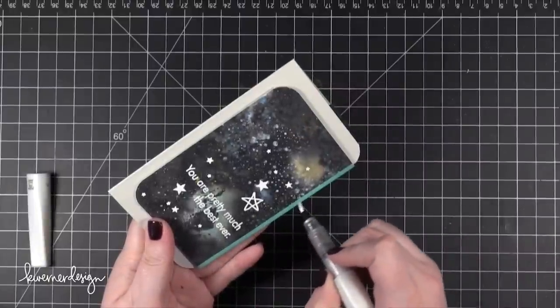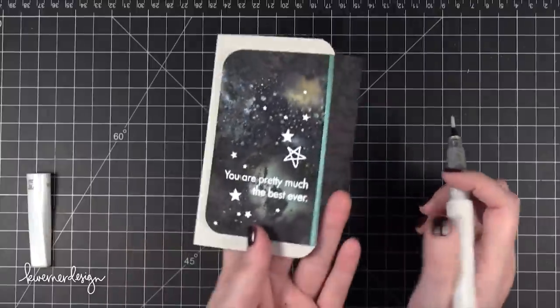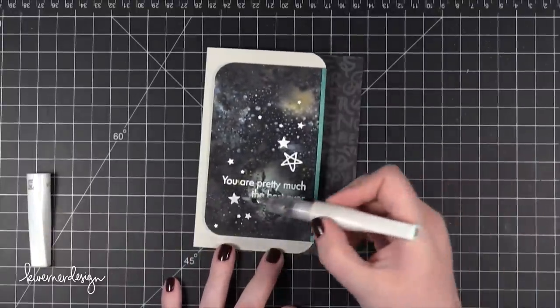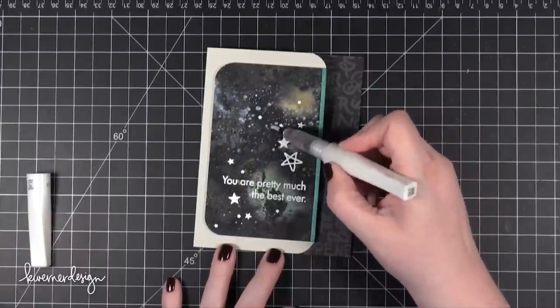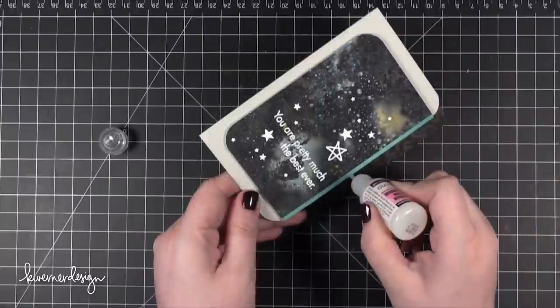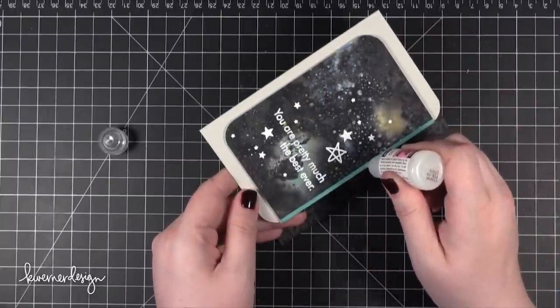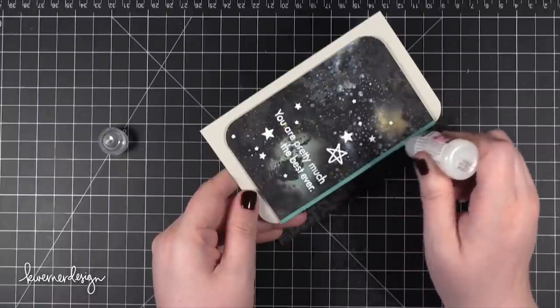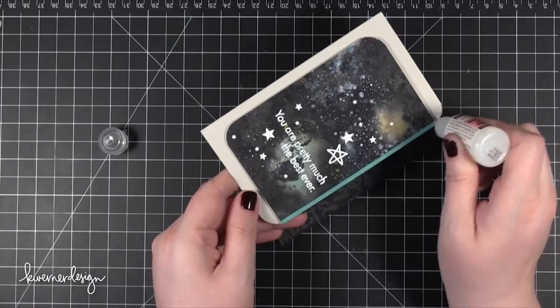Then I took a Wink of Stella Clear Glitter Brush Pen and I went over that green area. I also went over a few little areas on the galaxy. Not a whole lot because I realized it didn't show up too much after I started doing it, so I thought why am I doing this, it's not even showing. So I only did a few little pieces. Then I took some Glossy Accents and went over that little stripe because I wanted it to really stand out. Just giving it a little bit of a shine, a little bit of glossiness. It gives it a different texture so it stands up away from the rest of the card.